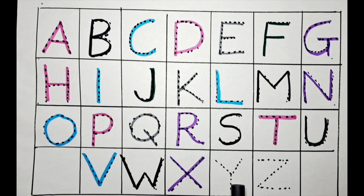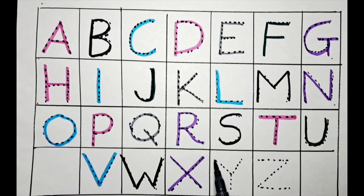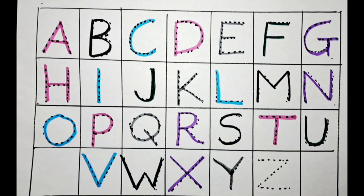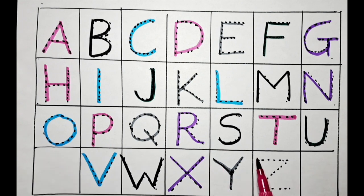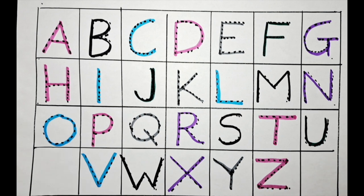Let's do the Y with the gray color. Y for yoyo. After this, it's Z. Let's do the Z with the pink color. Z for zebra.